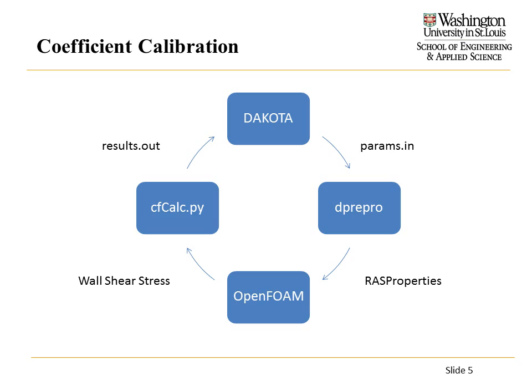The way DAKOTA works is based on the type of problem you're solving. It generates a params-in file. If you're doing a genetic algorithm, gradient-based, or coefficient calibration method, it generates a file to be input into your black box. DAKOTA is packaged with dprepro, which converts the params-in file into whatever file format your program needs. Since we're calibrating CB1, that variable is in the RAS properties file of OpenFOAM, so dprepro will modify that file.